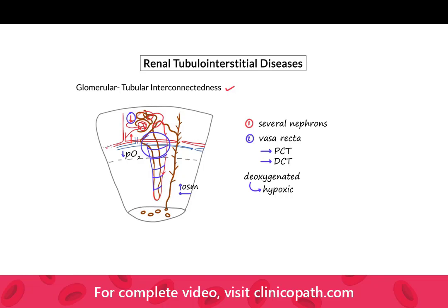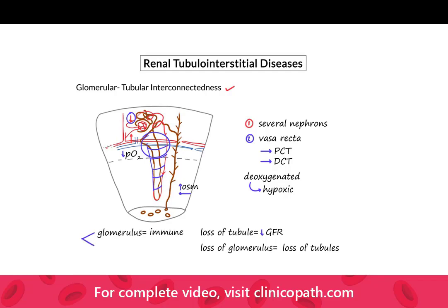Anytime we talk about the loss of tubules, a loss of tubule means that because you can't filter, you also get a loss of filtration. Similarly, anytime you get a loss of glomeruli, because of the blood supply coming through the glomerulus, you inevitably get a loss of tubules. So even though we separate those two by pathology — where we think of the glomerulus as being functionally immune injury and the tubules as being hypoxic and toxic injury — in fact we can see they're intimately related.